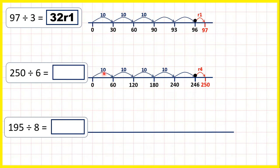So 250 divided by 6: we counted 10, 20, 30, 40, 41 steps of 6, but then we needed another 4. So our answer is 41 remainder 4.